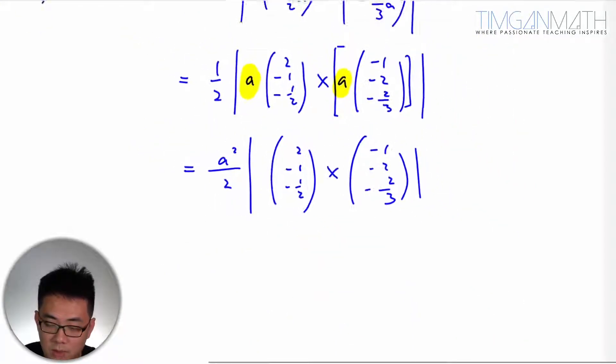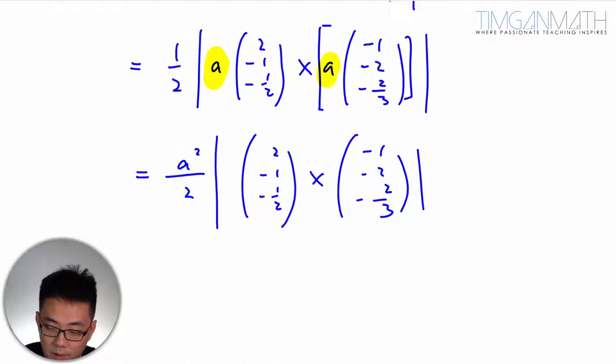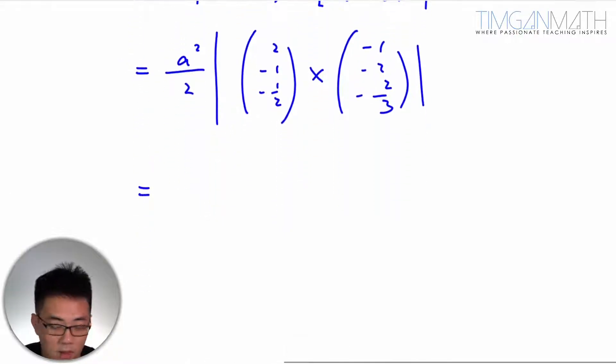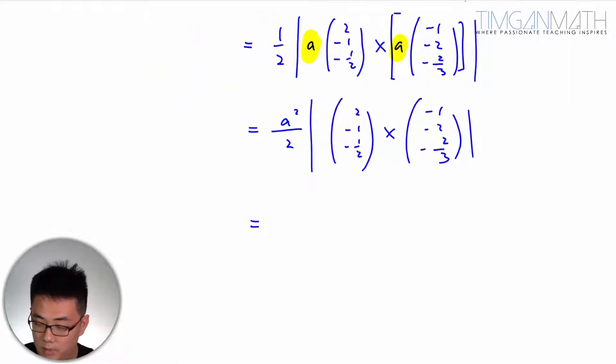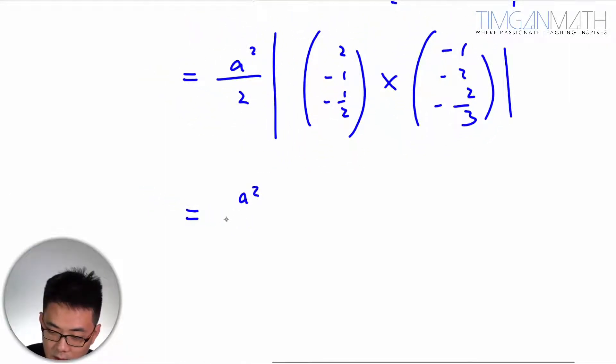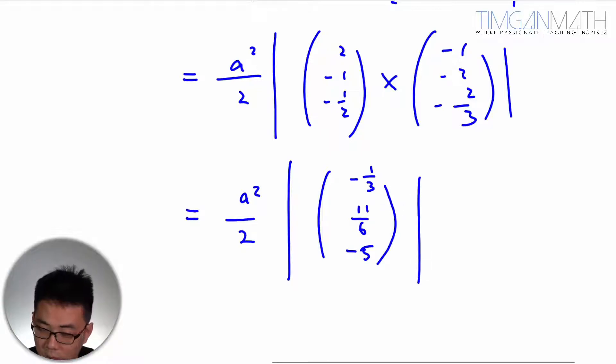So you're just going to perform a cross product here. So we're just going to perform it. And what we'll get here is actually just A squared. Just be careful. This is minus 1 over 3. And the subsequent one will be 11 over 6. And the last one will be negative 5.